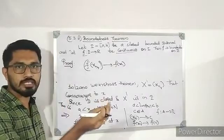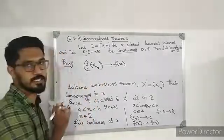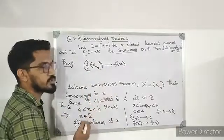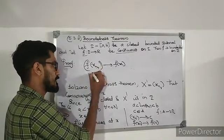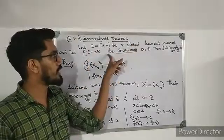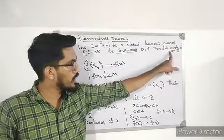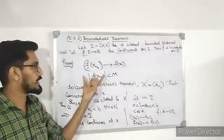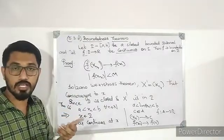The sequence f(xn) is bounded, since it converges. But we assumed |f(xn)| > n for all n, which means f(xn) is unbounded. This is a contradiction. Therefore our assumption that f is not bounded must be false. Hence, f is bounded. Since the function is continuous on a closed and bounded interval, it is bounded.